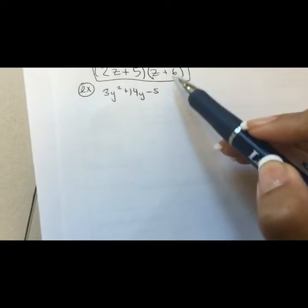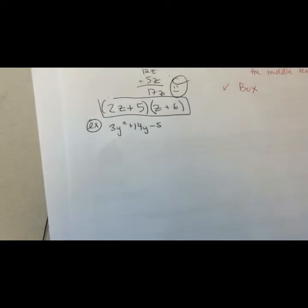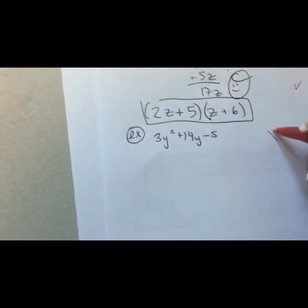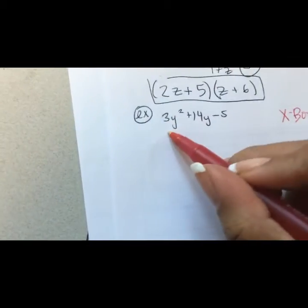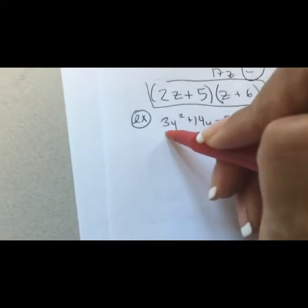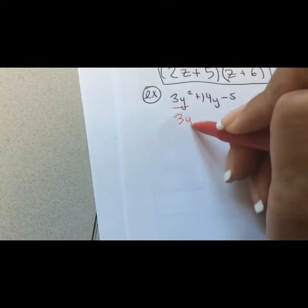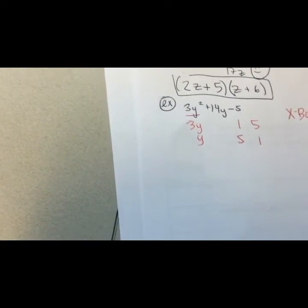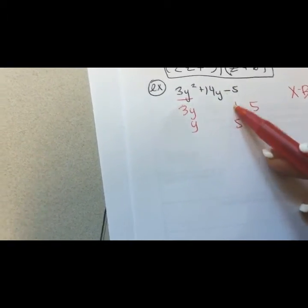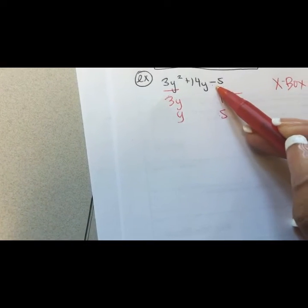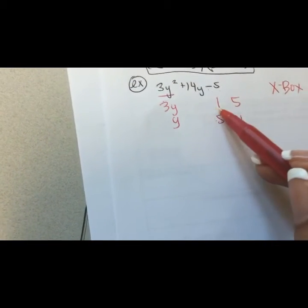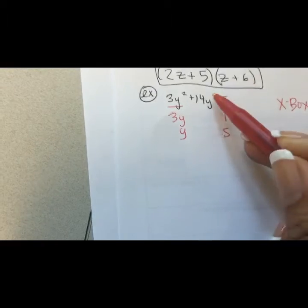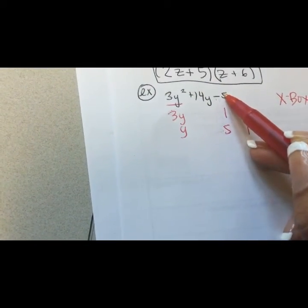Now I'm going to do another example with a minus sign. I notice there are three terms so I'll use the Xbox method again. It's already in standard form. For 3y-squared, two numbers that give me that are 3y times y. Two numbers that give me 5 are 1 and 5. Notice there's a negative sign, so one of these will have to be negative in order to multiply to give me negative 5, but I'll think about that later.